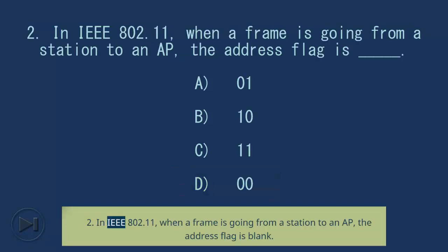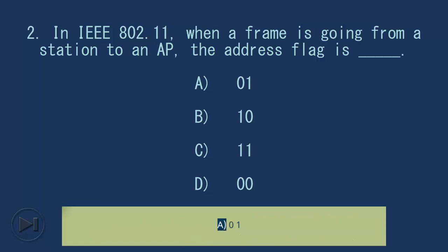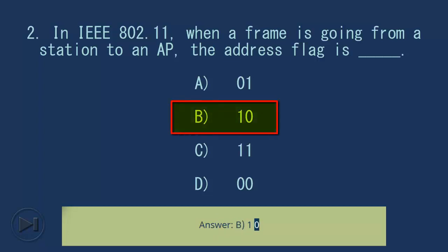Question 2: In IEEE 802.11, when a frame is going from a station to an AP, the address flag is blank. A. 01, B. 10, C. 11, D. 00. Answer: B. 10.